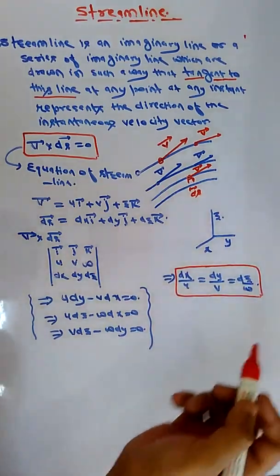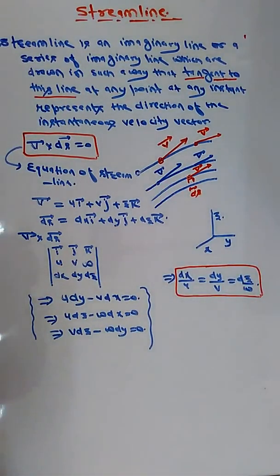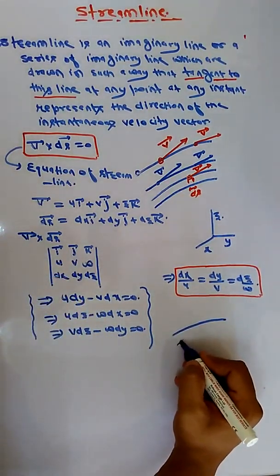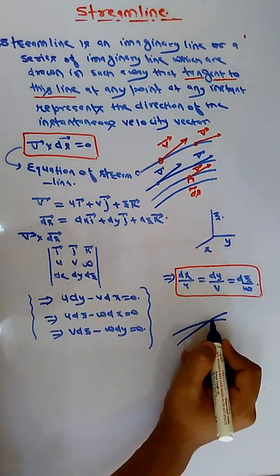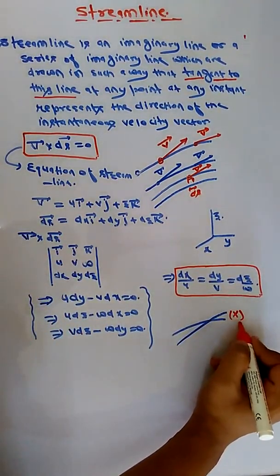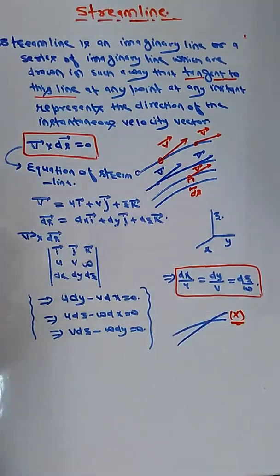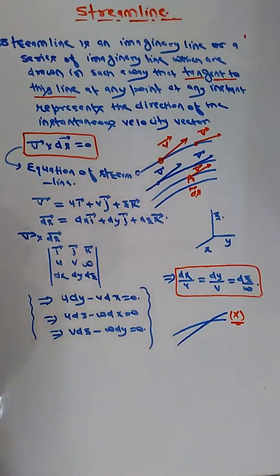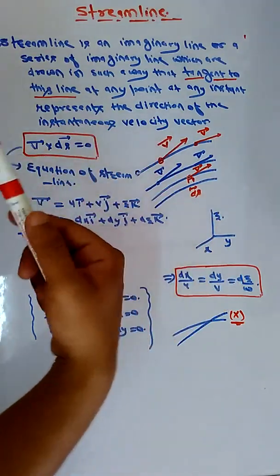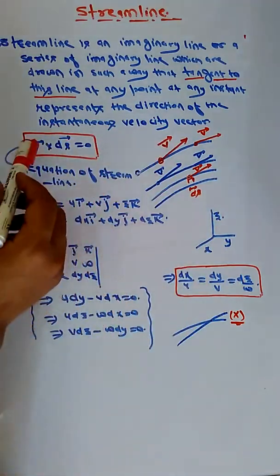One important property of streamlines is that no two streamlines cross or intersect each other. If I draw one streamline and another streamline intersects it, that cannot be valid — so this is wrong. Streamlines never cross each other. This is a key property of the streamline, along with the main property that a tangent drawn at any point at any instant gives the direction of the velocity vector.